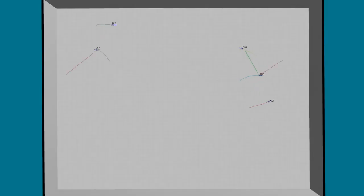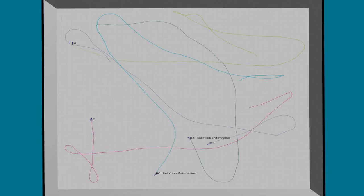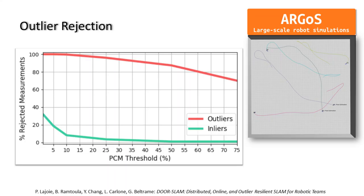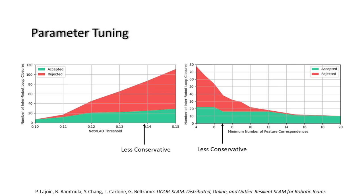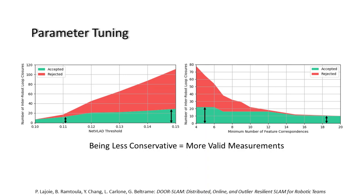We tested our system extensively in an Argos simulation to study the effect of the threshold parameter used to reject outliers. In this figure, we can see that using a threshold too low leads to the rejection of valid measurements, while a higher threshold can lead to the acceptance of spurious measurements which can cause the failure of the system. Another benefit of DoorSlam is that we don't need to use conservative parameters in the front end to avoid outliers. We can leverage the robust backend to tolerate spurious measurements and hopefully obtain more valid measurements in the end. Even though most of the new measurements are outliers, we obtain more valid measurements with less conservative parameters.